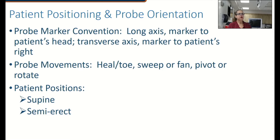Patient position will pretty much be supine. Sometimes a semi-erect position can help drop some of the gas out of your way — you can have somebody lean up on their elbows or actually sit up. Typically, probe marker to the head for a sagittal view of the aorta, and then transducer marker to the patient's right for a transverse view. And then you're going to be heel-toeing, sweeping, pivoting, and rotating.